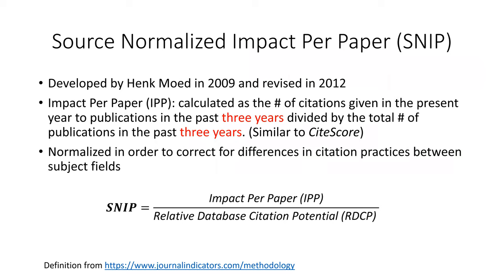Source Normalized Impact per Paper, or SNIP, is a size-independent metric developed by Henk Moed in 2009 and revised in 2012. SNIP is a ratio of impact per paper and relative database citation potential. The impact per paper is calculated as the number of citations given in the present year to publications in the past three years, divided by the total number of publications in the past three years. The impact per paper is very similar to the h-score.